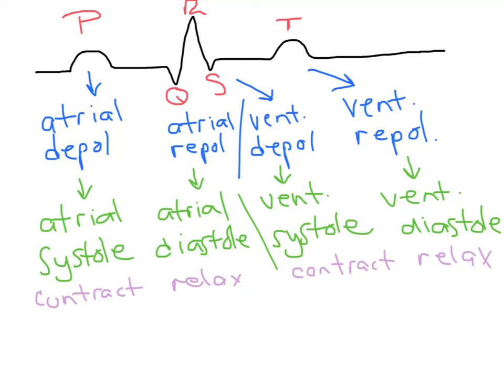This is a quick outline of the basics of the cardiac cycle, trying to relate the electrical events to the mechanical events. The electrical events are those occurring on the ECG. At the top we have the ECG and the variety of waves representing the sum of all the activity of the heart in terms of depolarization and repolarization.